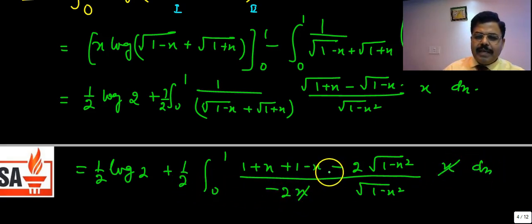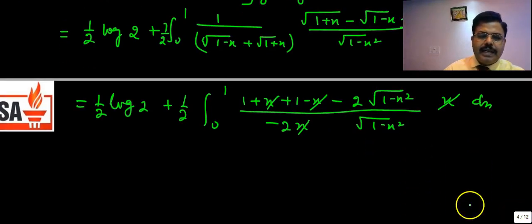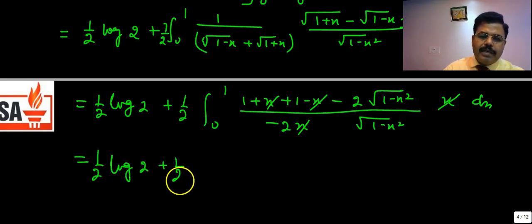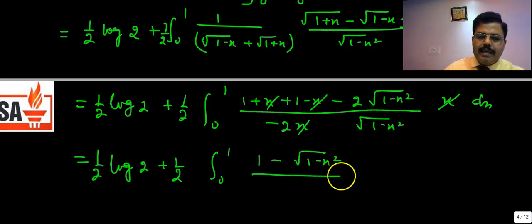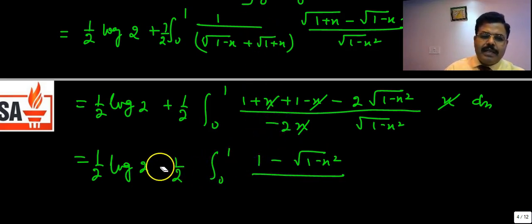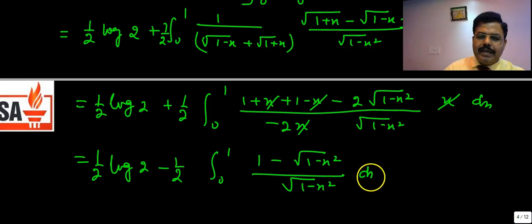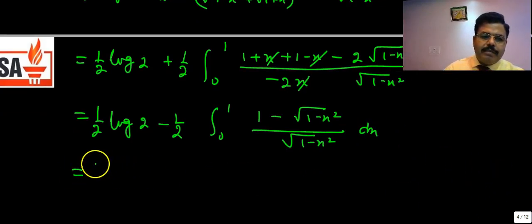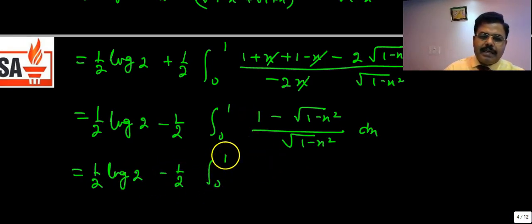After simplification, we get: I = ½·log2 + ½·∫₀¹ (1 − √(1−x²)) dx. Now separating: ½·log2 + ½·∫₀¹ dx − ½·∫₀¹ √(1−x²) dx. Also a sign correction gives: I = ½·log2 − ½·∫₀¹ [1/√(1−x²) − 1] dx.